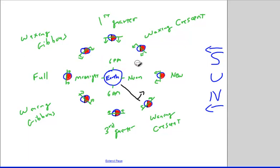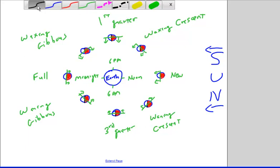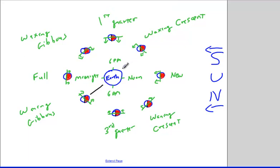We can use this diagram for other questions too. Let's say the waning gibbous moon is just rising — what time of day is it? If the waning gibbous moon is just rising, it's just coming above the horizon, and we look at where that is on the diagram. That's in between 6 p.m. and midnight, so the waning gibbous moon would be rising around 9 p.m. So around 9 in the evening, if you see a moon just rising on the eastern horizon, it is a waning gibbous moon.